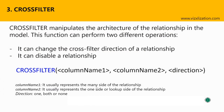The second modifier is CROSSFILTER. Its behavior is similar to USERELATIONSHIP. CROSSFILTER manipulates the architecture of a relationship in the model and can perform two operations: it can change the cross-filter direction of a relationship, or it can disable a relationship. The syntax has three parts — column name one (many side), column name two (one/lookup side), and direction, which can be ONE, BOTH, or NONE.